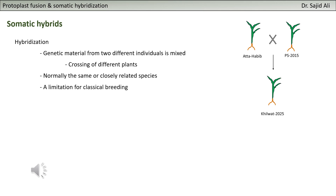This is classical hybridization. Imagine a friend names it Khilwat 2025 - just an imaginary name. You have the possibility to combine the traits of two different plants in one plant. This you do with normal crossing, which is only possible with closely related individuals. Normally it is done within the same species, but sometimes you can go for related species with particular breeding techniques.